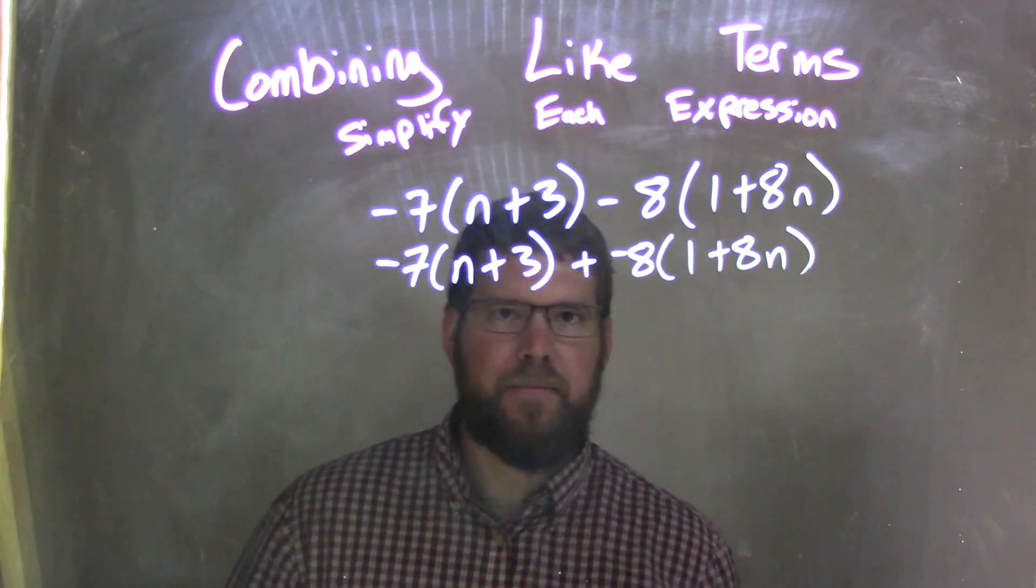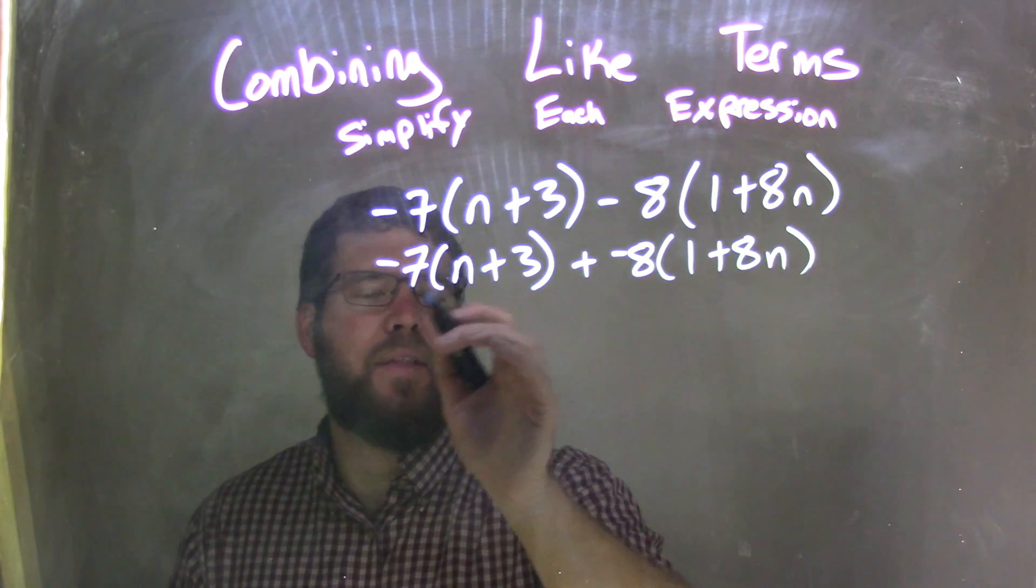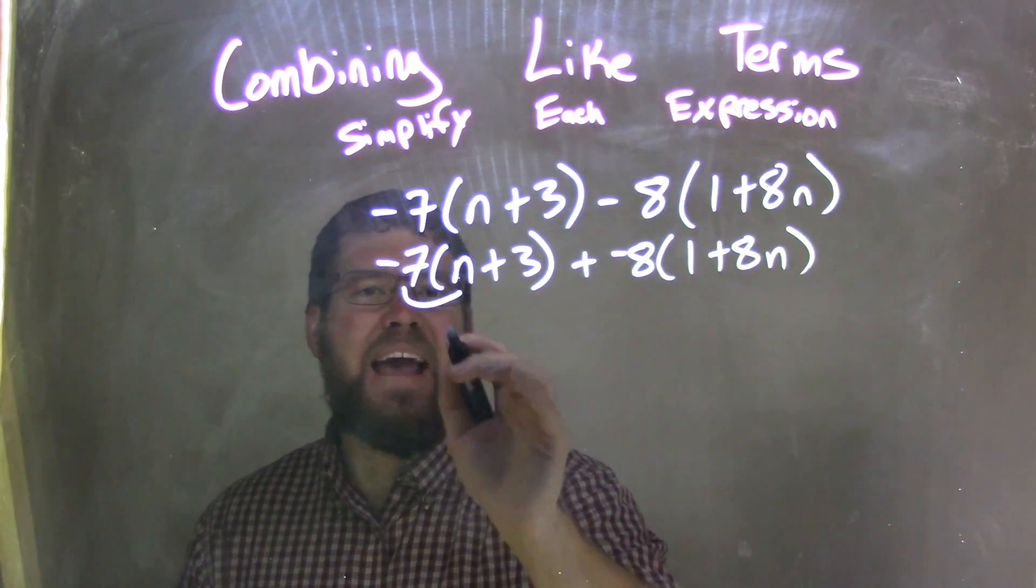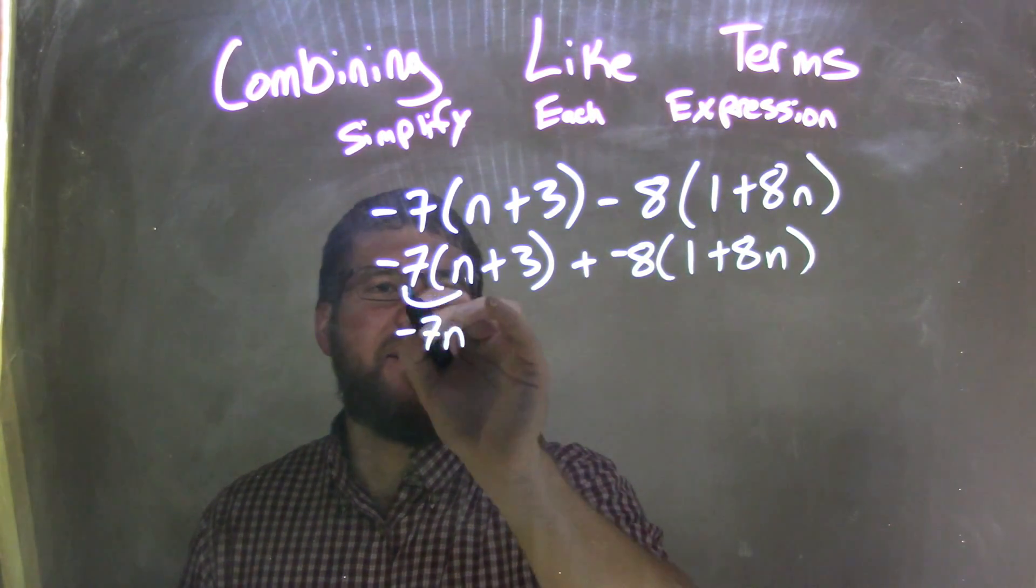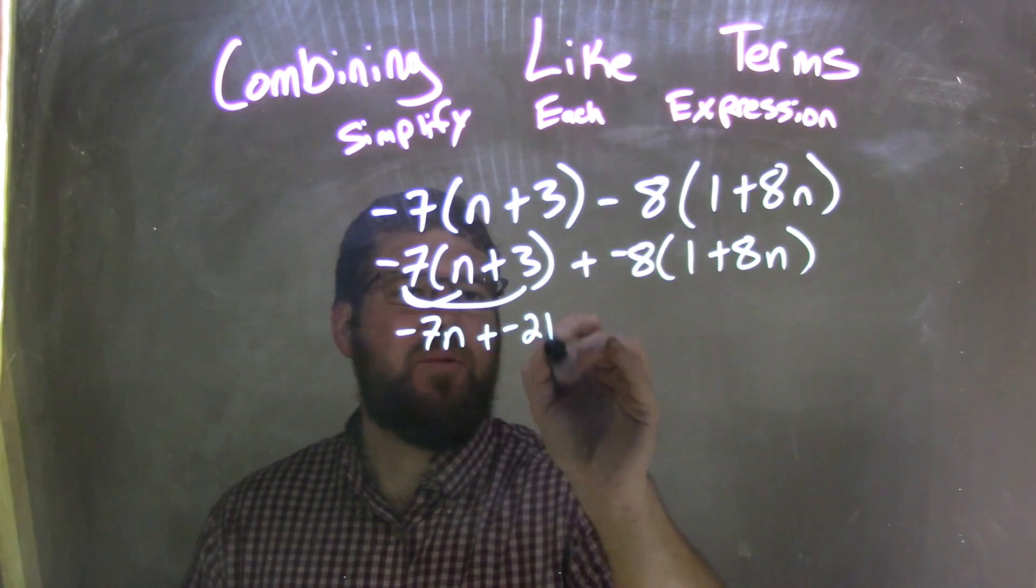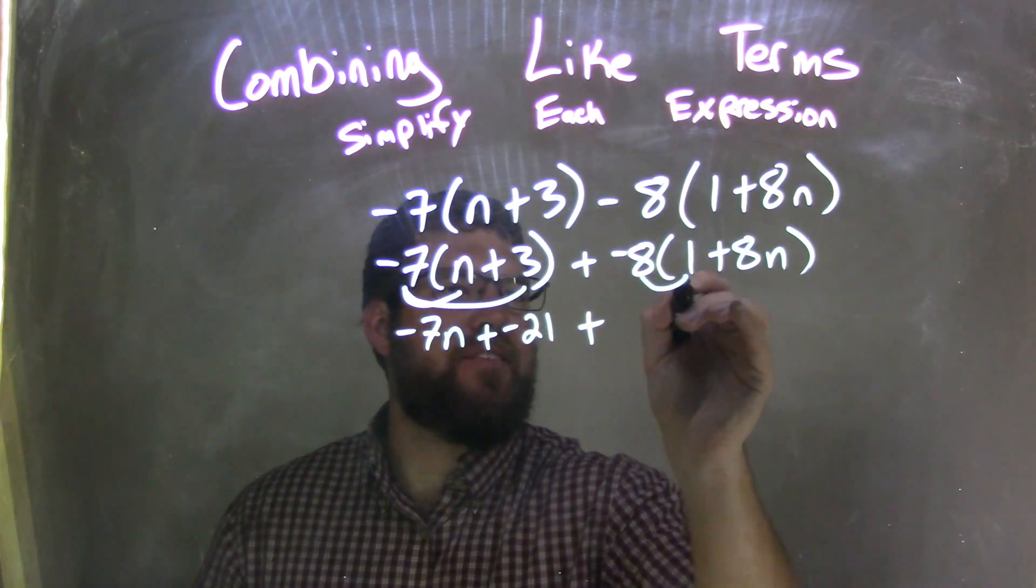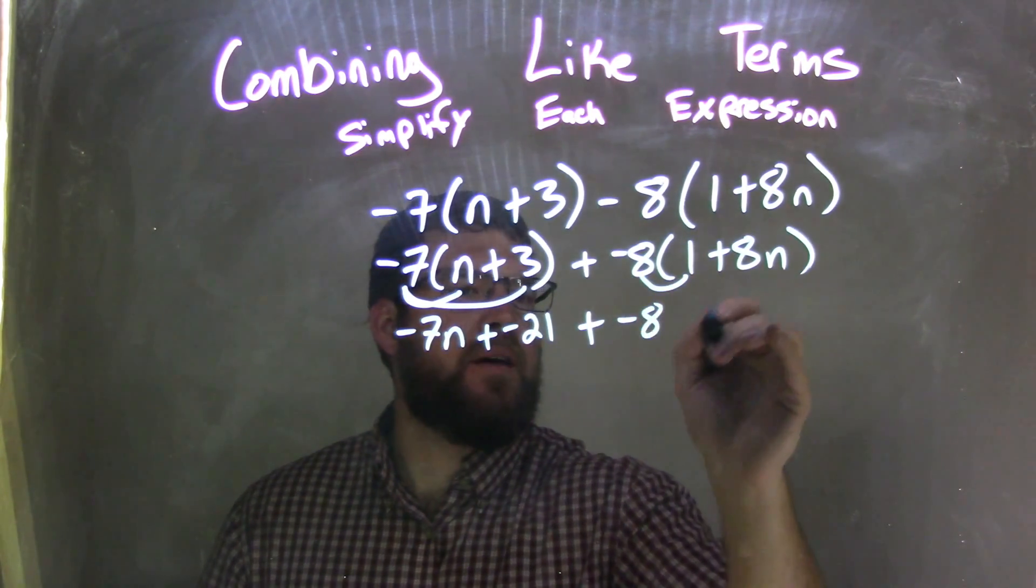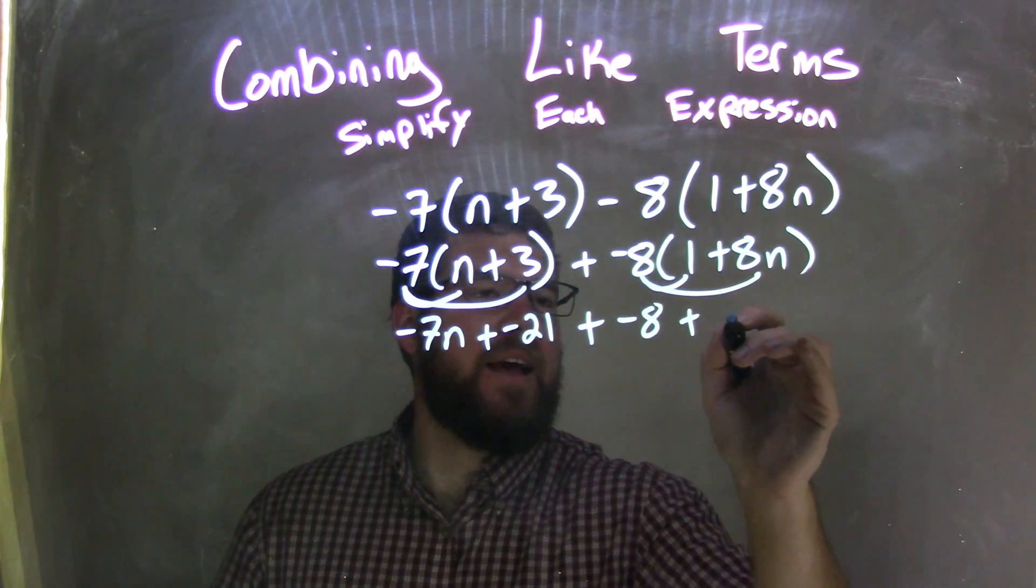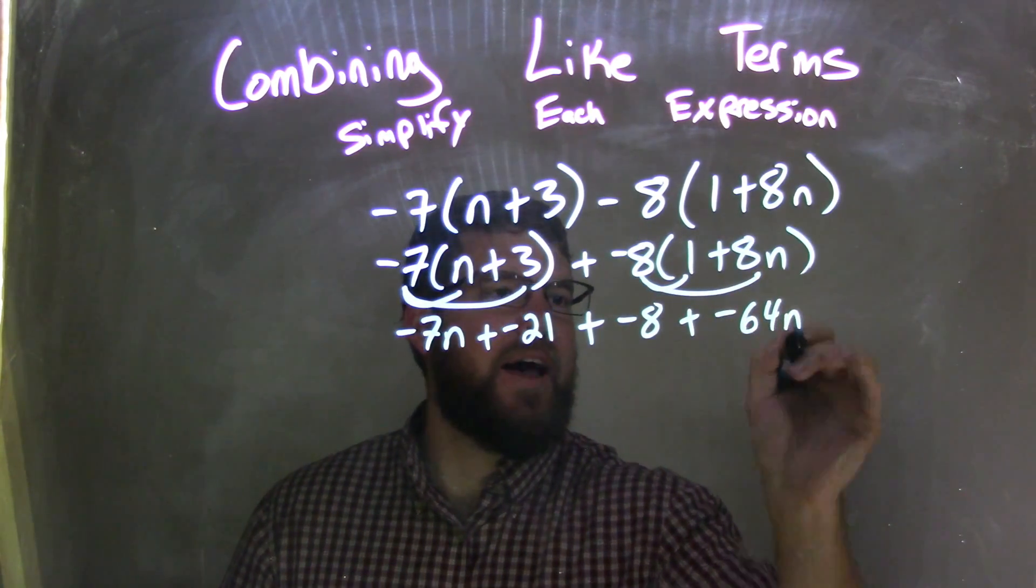Let's start distributing. Negative 7 times n is negative 7n, negative 7 times 3 is negative 21, plus negative 8 times 1 is negative 8, plus negative 8 times 8n is negative 64n.